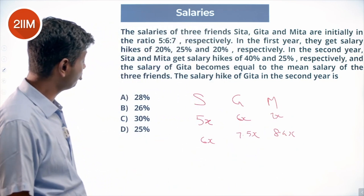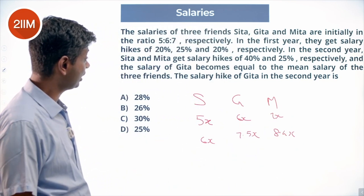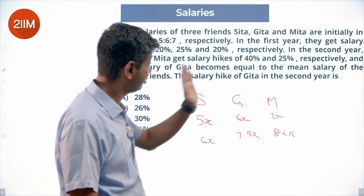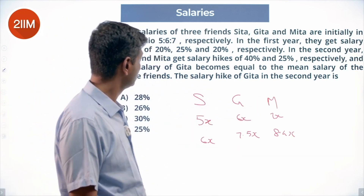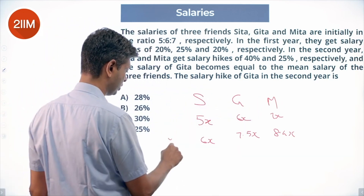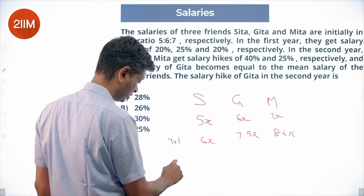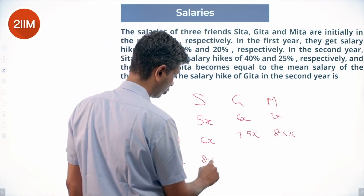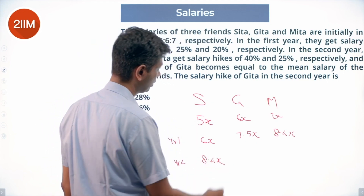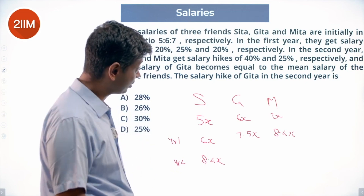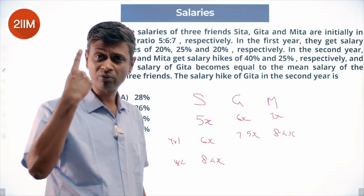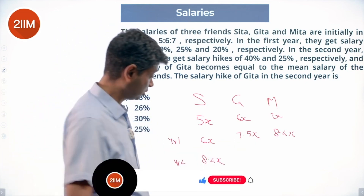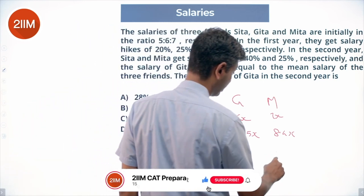In the second year, Sita and Meeta get salary hikes of 40% and 25% respectively. In year 2, Sita gets 40%, so 6x into 1.4 gives 8.4x. Meeta gets 25%, which is one-fourth of 8.4, that is 2.1, so Meeta's salary becomes 10.5x.